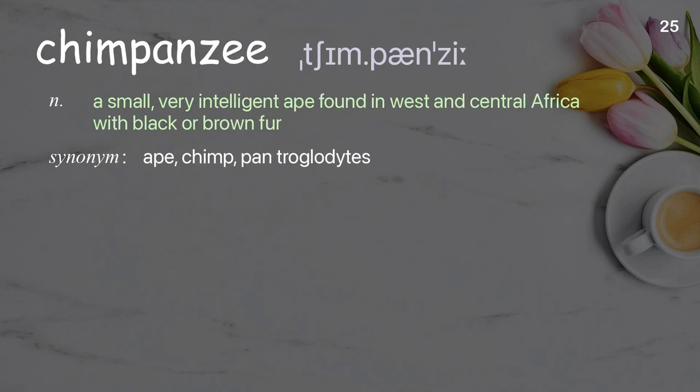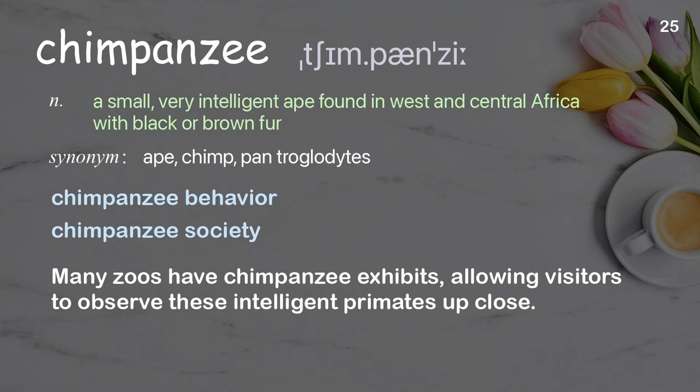Chimpanzee: a small, very intelligent ape found in West and Central Africa with black or brown fur. Examples: chimpanzee behavior, chimpanzee society. Many zoos have chimpanzee exhibits, allowing visitors to observe these intelligent primates up close.